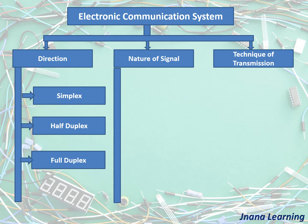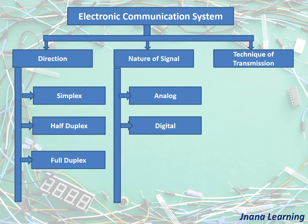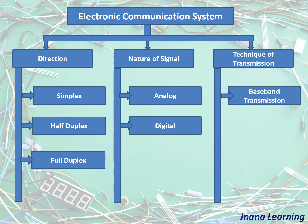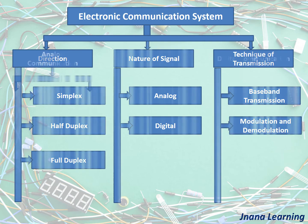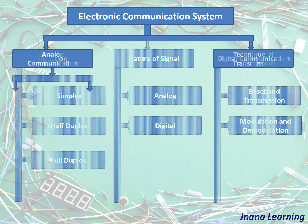Under the nature of signal, we have analog communication and digital communication, classified based on whether the signal is analog or digital. Under the technique of transmission, there are two types: baseband transmission and transmission based on modulation and demodulation.